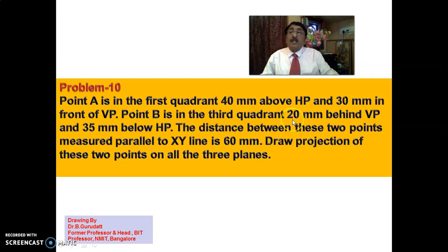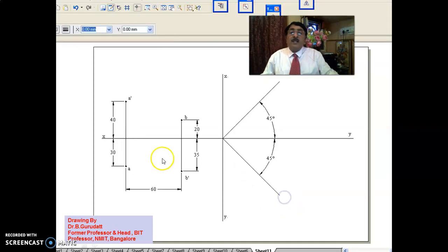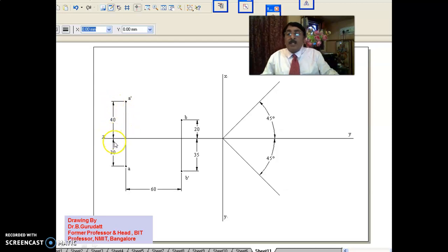Point B is in the 3rd quadrant — 20mm behind VP and 35mm below HP. For the 3rd quadrant, above XY line you have HP and below XY line you have VP. So for the 1st quadrant: 40mm above HP, 30mm in front of VP. For the 3rd quadrant: 20mm behind VP gives us B (top view), and 35mm below HP gives us B-dash (front view).